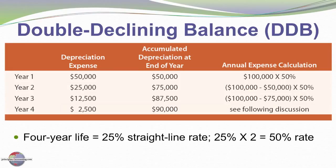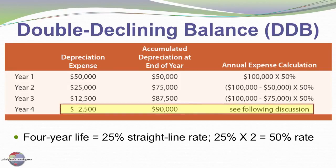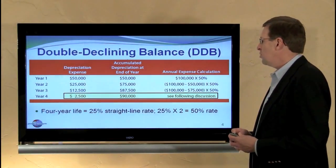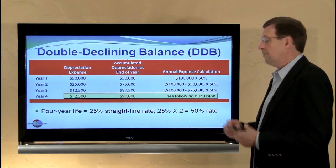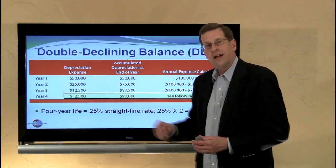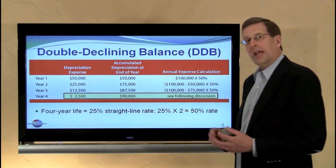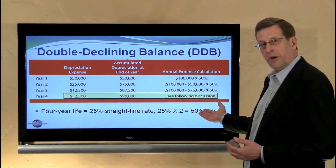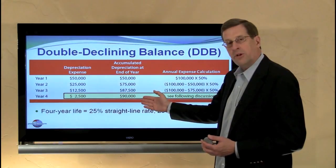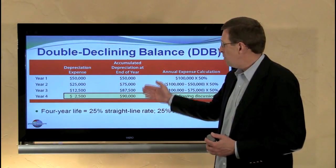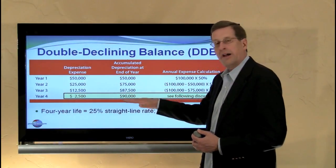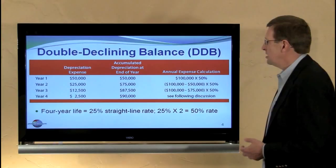Each year the amount will be reduced correspondingly. The last year can become a bit problematic. We would have a remaining $12,500 of net book value going into that year, and 50% times that would be well in excess of $2,500 — but we only show $2,500 as depreciation expense. The reason is we've ignored salvage value to this point. We only take salvage value into account when we depreciate down to or through the depreciable base. We had a $90,000 depreciable base, we hit that in the last year, and we simply cut off at that point.